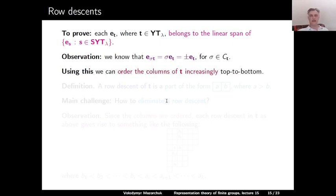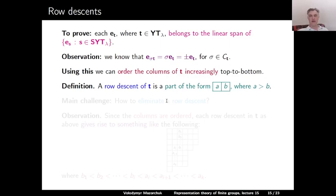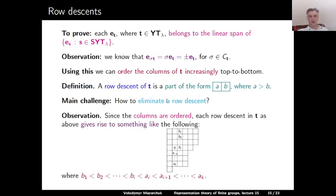Definition: A row descent in a tableau is a pair AB in some row where A is in the box to the left of B and A > B. The main challenge is how to eliminate a row descent. We want to take a Young Tableau in which columns are already ordered (increasing top to bottom) but rows are not necessarily ordered, meaning some row contains a row descent. We are going to describe a procedure to write the corresponding polytabloid as a linear combination of other polytabloids in which this row descent no longer appears.